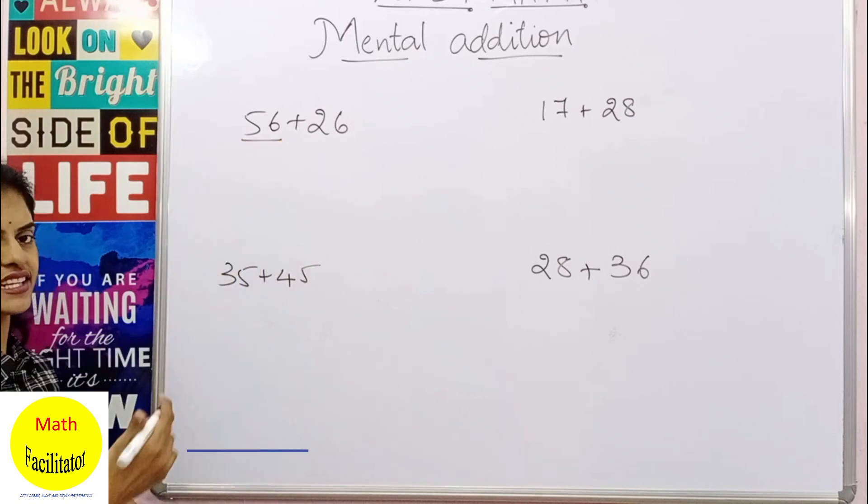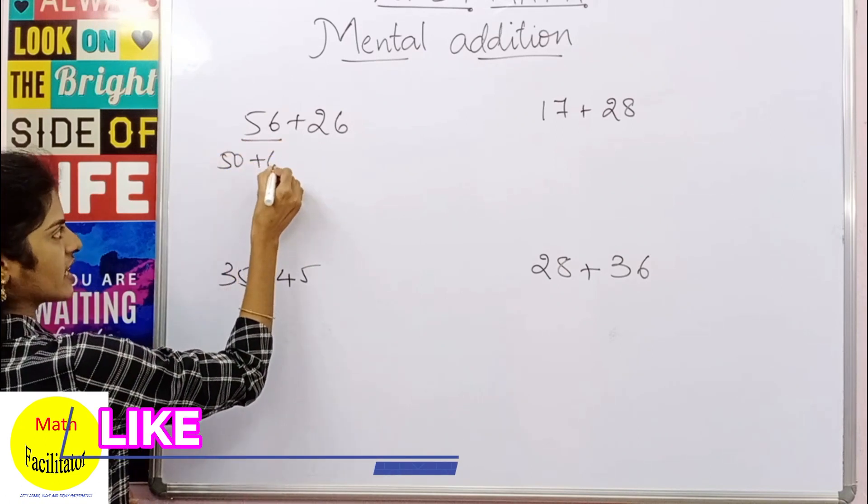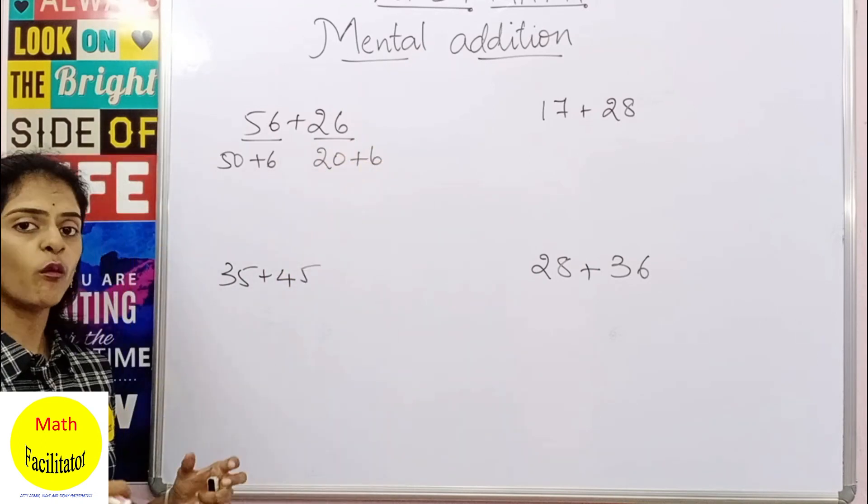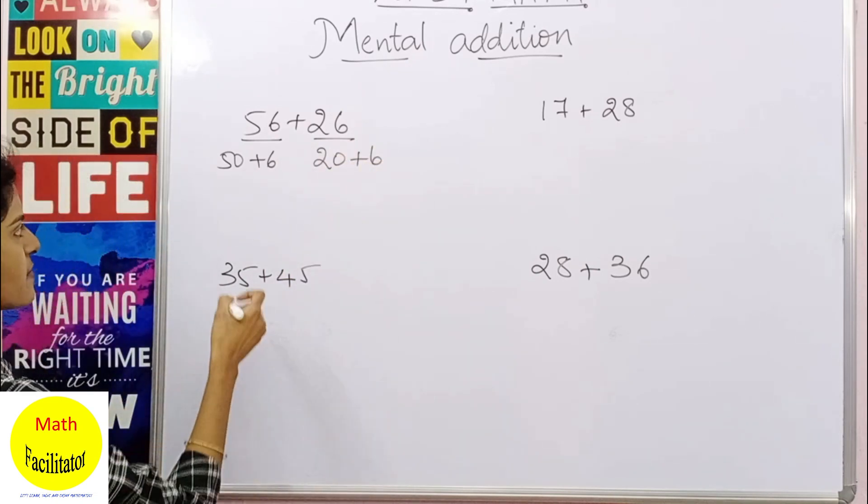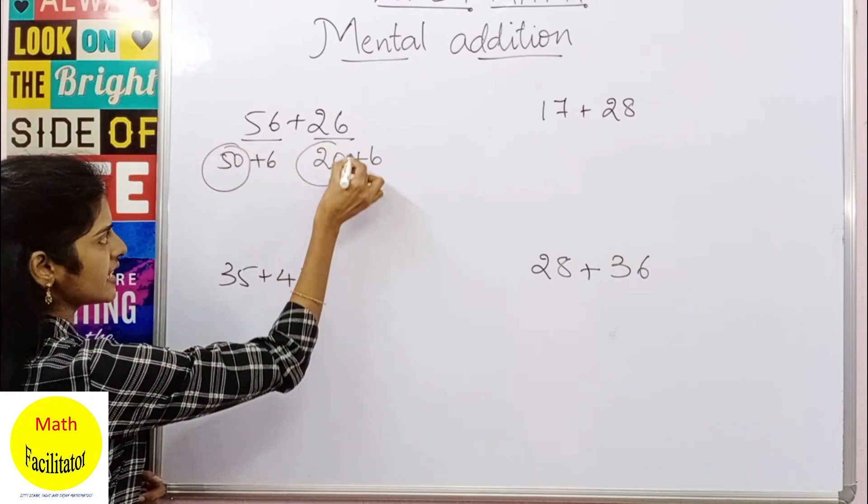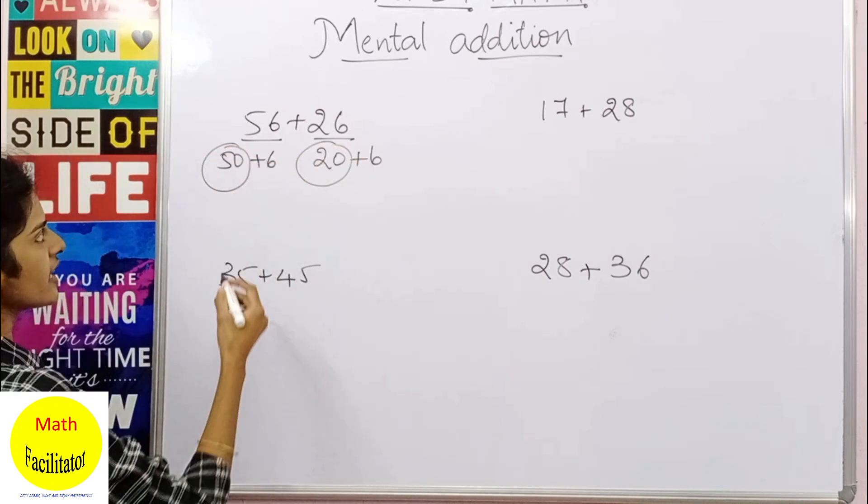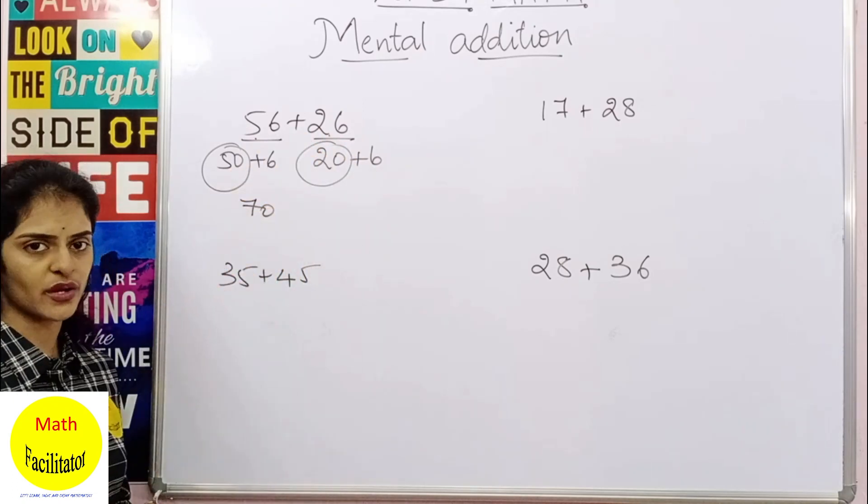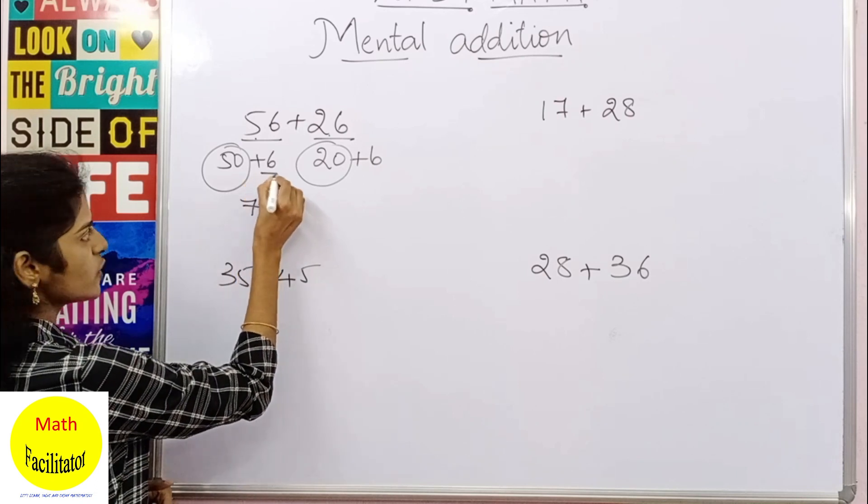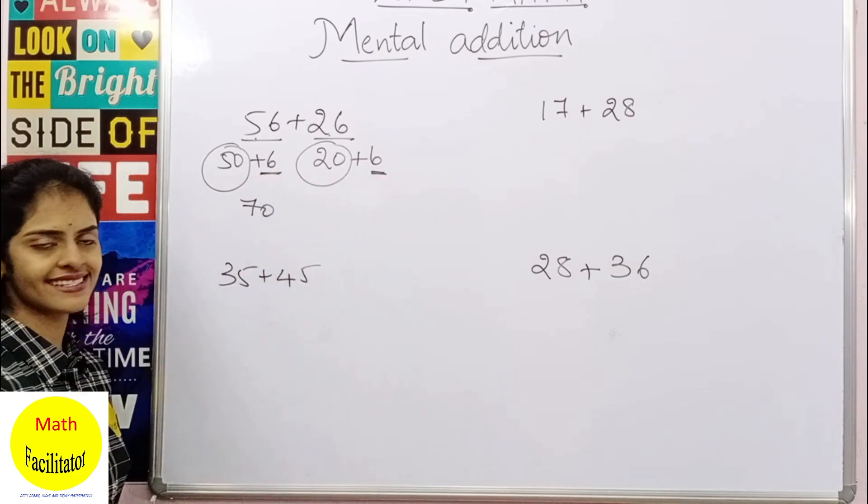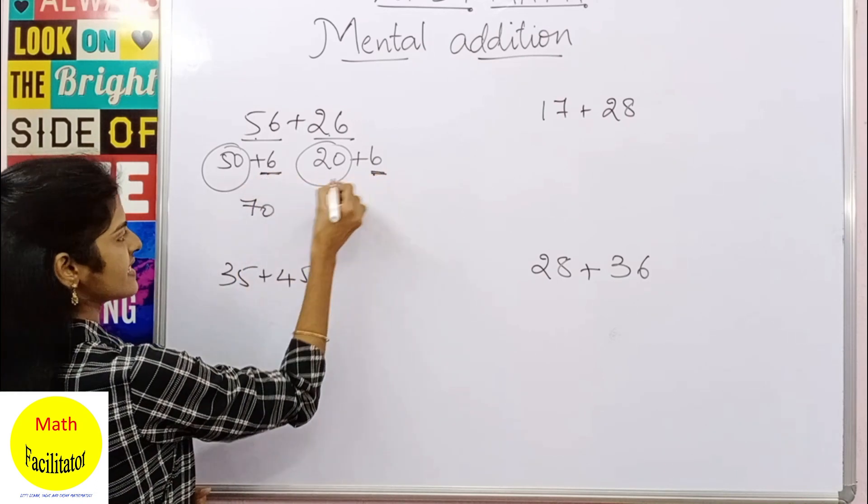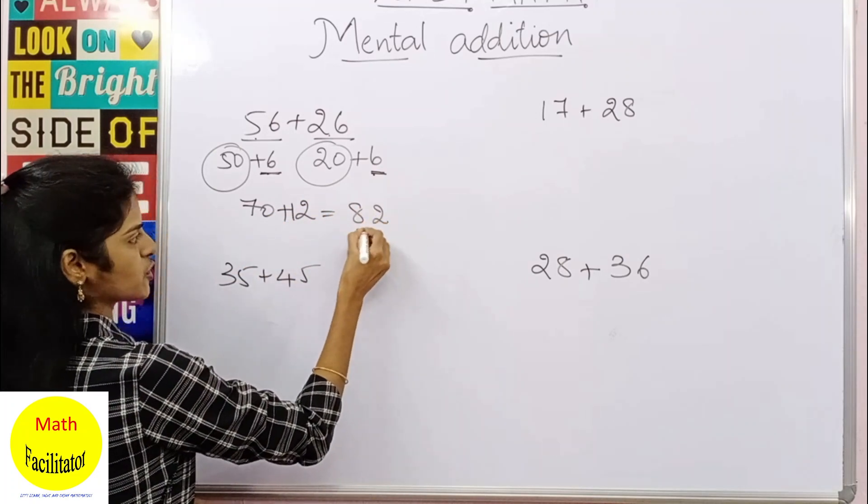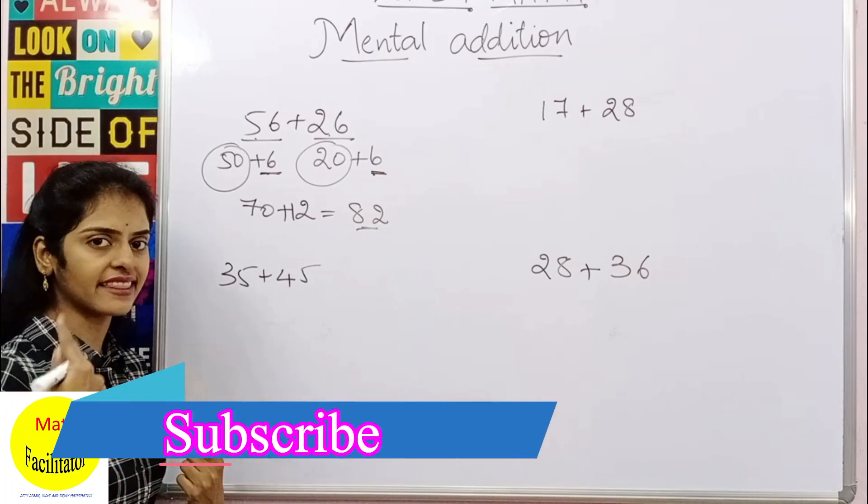Now 56 is nothing but 50 plus 6, do you agree? Yes. And 26 is nothing but 20 plus 6. So what we do here is that we'll add 50 and 20 firstly. So 56 and 26, you add 50 and 20 first, so it is 70. 50 plus 20 is 70. Now you add up 6 and 6, so 6 plus 6 is 12. So the answer is 82.